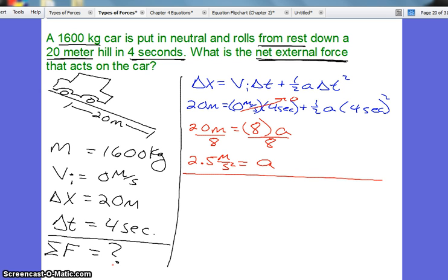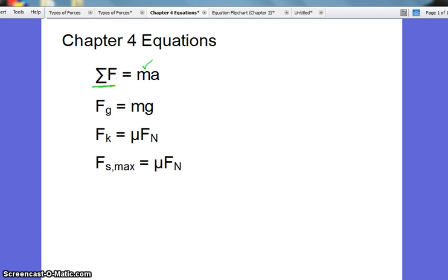However, that's not our main goal. Our main goal is to find sigma f. So now we go back to these chapter 4 equations, and we see now we do know the acceleration, so we can use that equation to solve for the total external force.